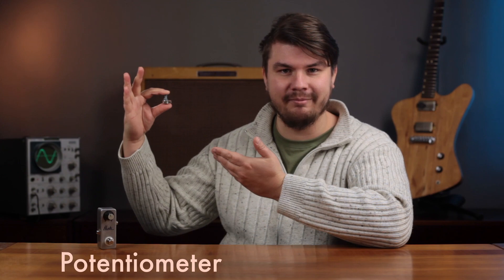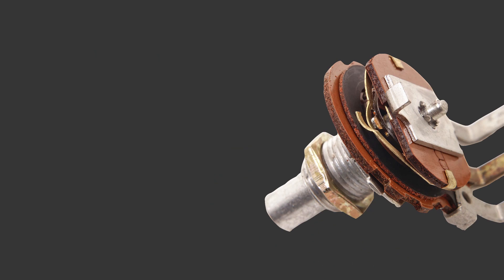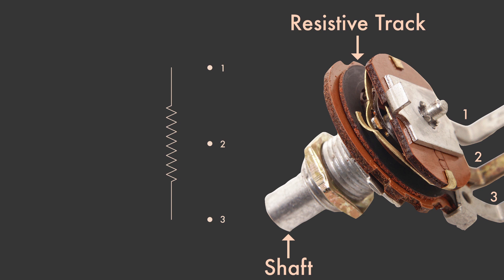But luckily, non-fixed resistors do exist. Potentiometers. Let's open one up and have a look at its guts. We've got three terminals, a circuit board with some black tracks on it, a shaft we can turn and a wiper that turns along with it.